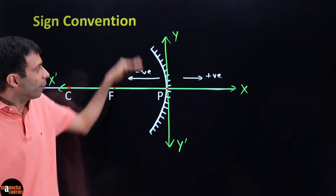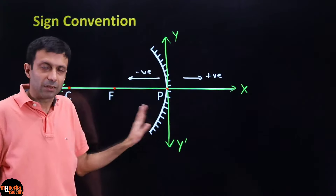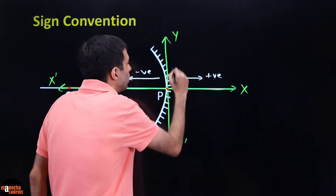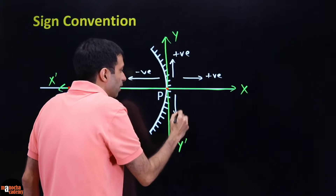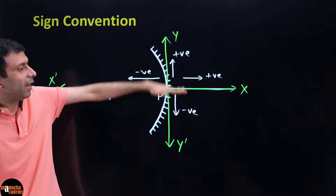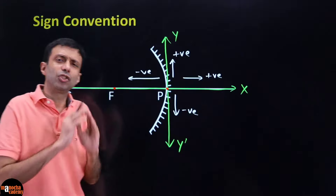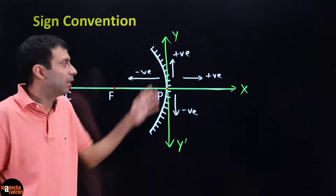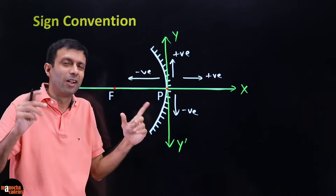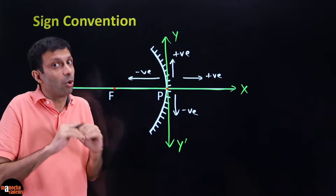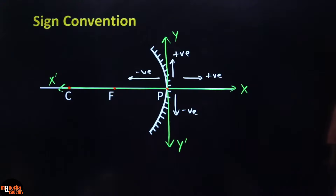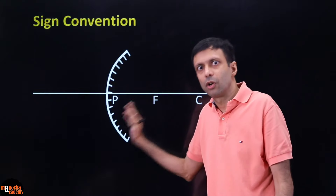When measuring heights - object height or image height - you measure along the y-axis. Anything measured upwards above the principal axis is positive. Anything below, like an inverted image, is negative. The easiest way to remember sign convention is to draw that rough diagram with the coordinate axis. When you draw it, your coordinate geometry brain automatically starts working and you think positive or negative correctly.